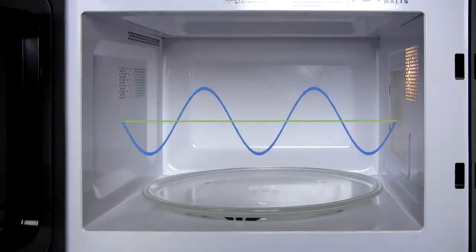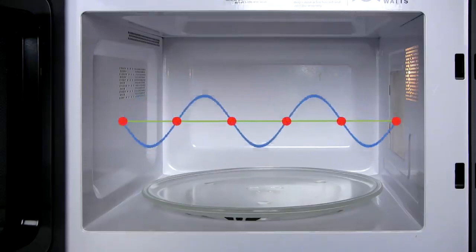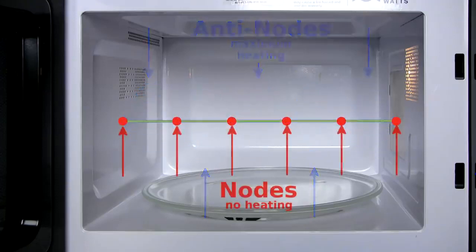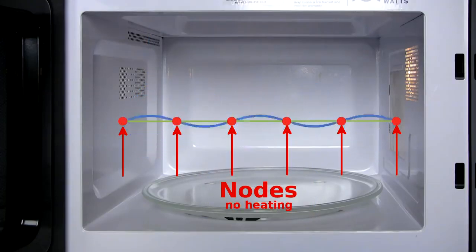The three-dimensional pattern of waves is difficult to predict, but the principle can be seen by looking at the waves in a single dimension. The peaks and valleys in the wave represent the greatest energy of the wave. The nodes here correspond to the cold spots inside the chamber.